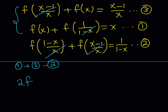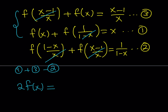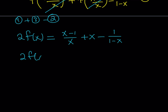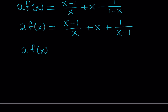Adding equations 1 and 3 and subtracting equation 2 gives 2·f(x) on the left-hand side. On the right-hand side we get x + (x-1)/x minus 1/(1-x). I'll rewrite −1/(1−x) as +1/(x−1) to make it easier. The common denominator is x(x−1), so we multiply through accordingly.